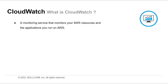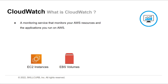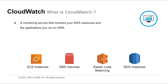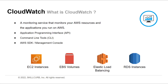You can use CloudWatch to collect and track metrics, which are variables you can measure for your resources and applications. With the help of CloudWatch, you can collect and track metrics. CloudWatch enables real-time monitoring of AWS resources such as Amazon EC2 instances, Amazon Elastic Block Store volumes, Elastic Load Balancing, and Amazon RDS instances. Users can access CloudWatch functions through an API, command line tools, and one of the AWS Software Development Kits or the AWS Management Console.